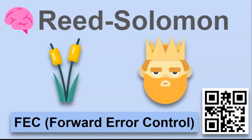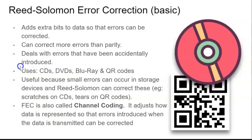In this video, we're going to learn a bit more about Reed Solomon encoding. That's the forward error control method that's associated with QR codes. It works by adding extra bits to data so that errors can be corrected, and it's a lot more powerful than parity.